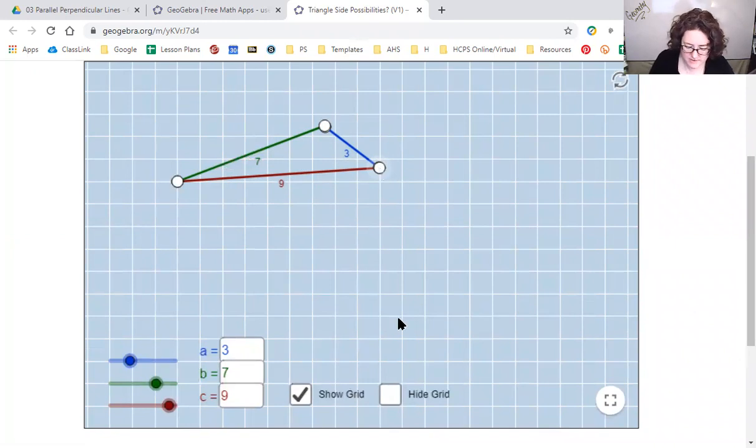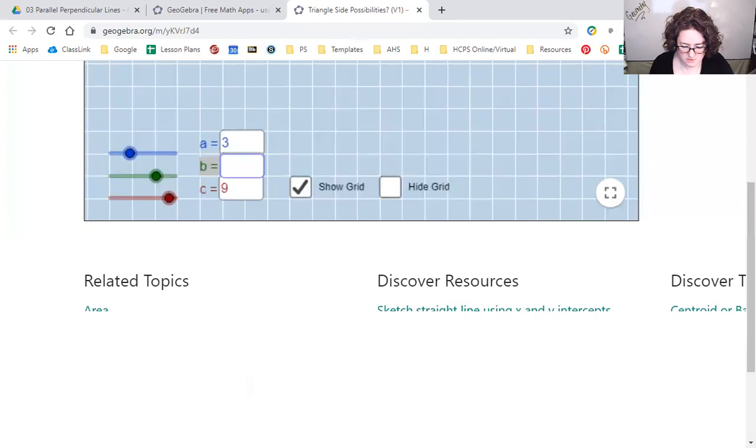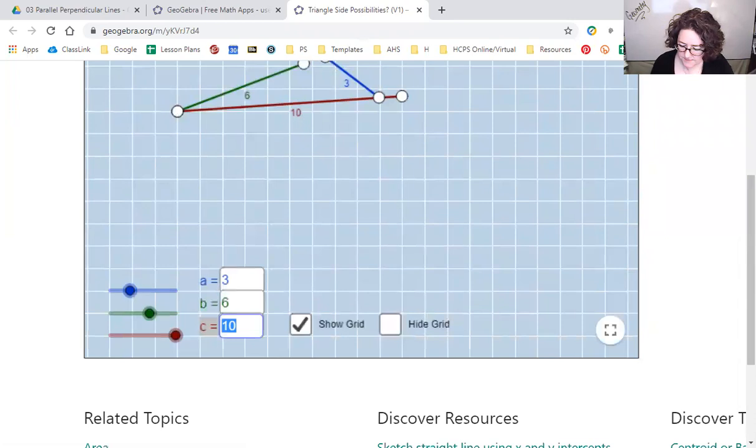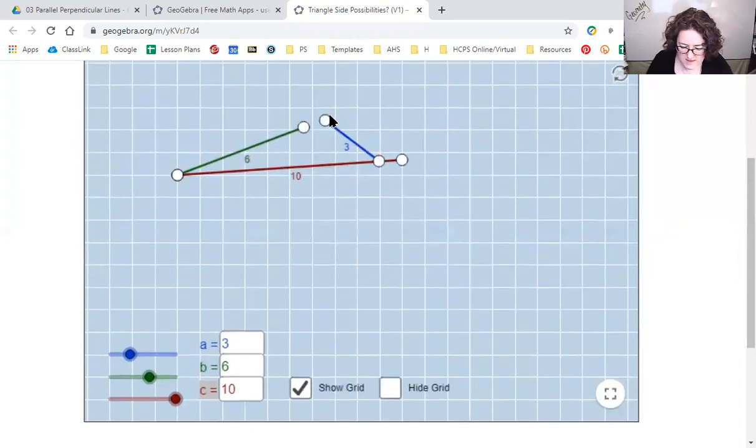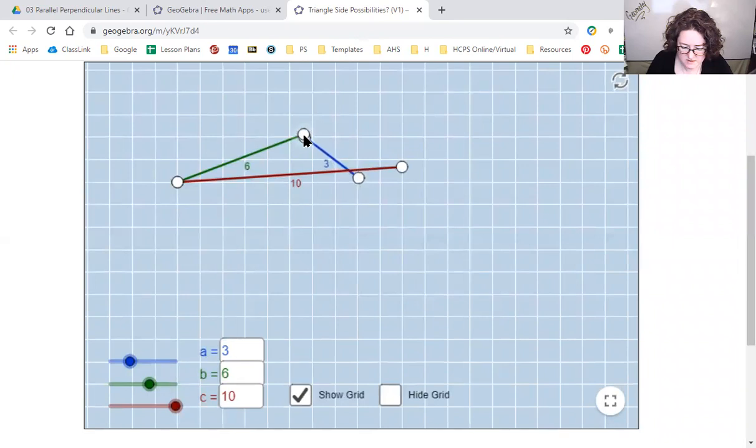Next one, 10, 3, and 6. Let's leave the 3 where it is, change to the 6, and change the 9 to the 10. I don't think we're going to have any problems with this. Let's see. Uh oh. This one's not going to work. Even if I straighten it perfectly, it doesn't work. They're not going to connect. So 10, 3, and 6 doesn't work.